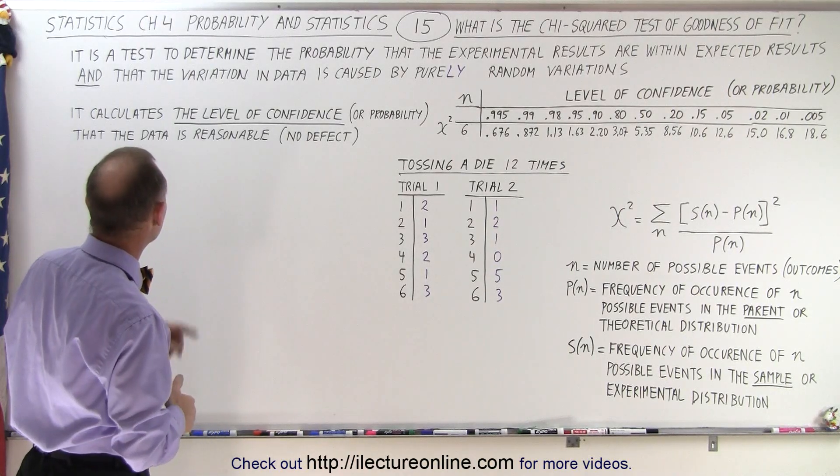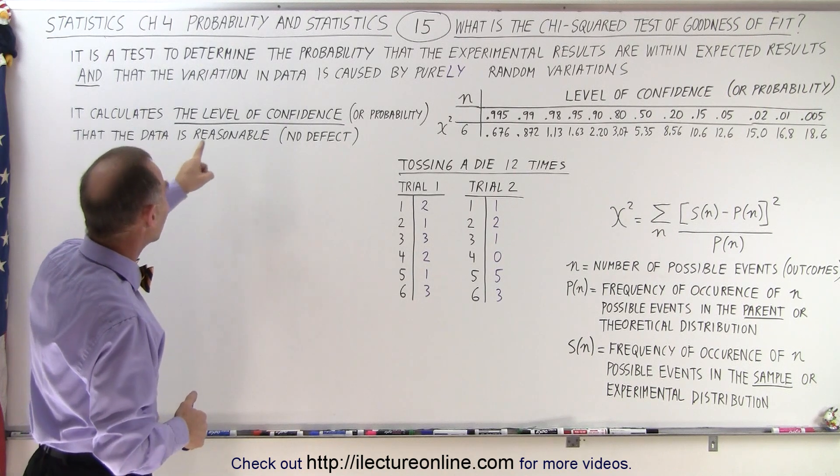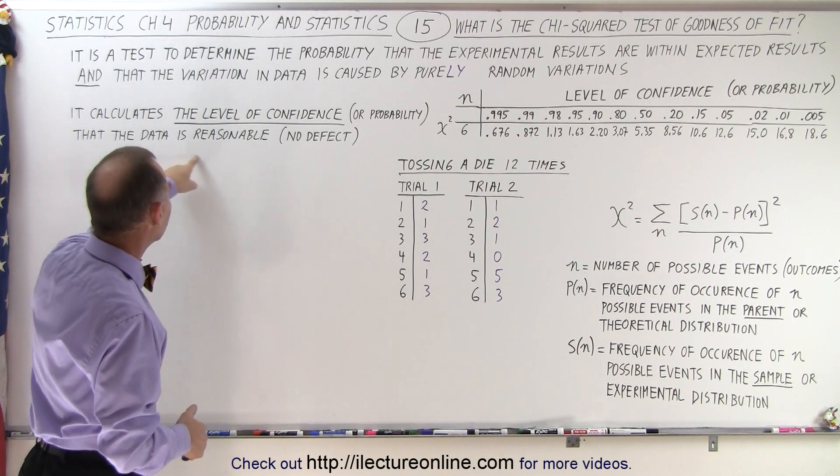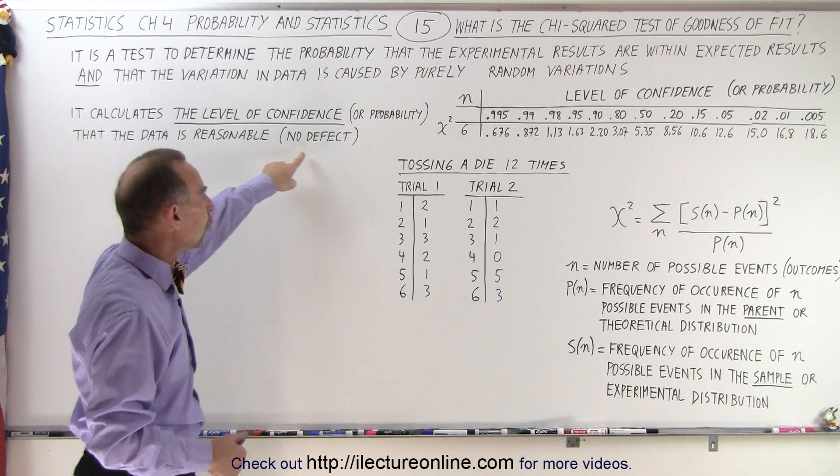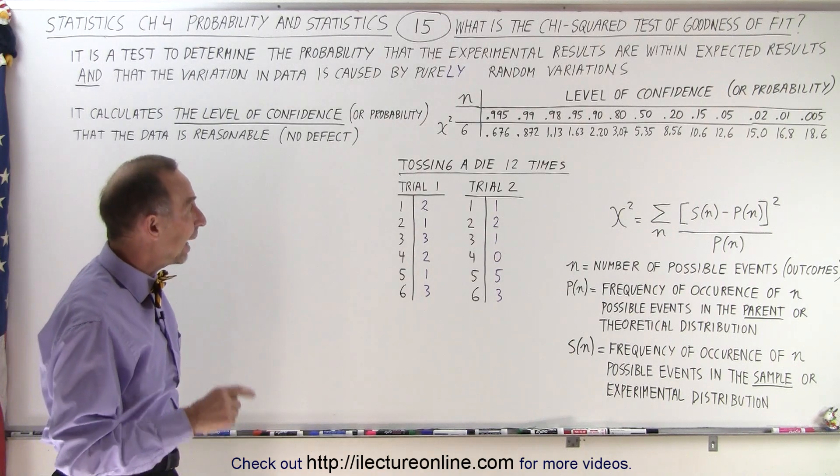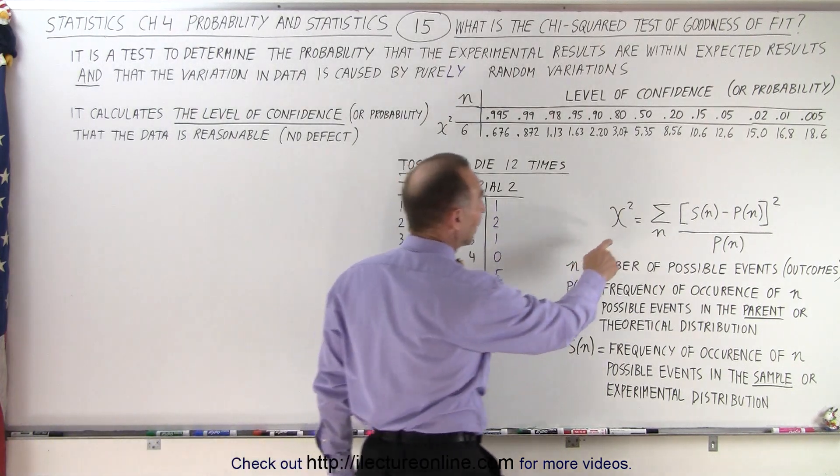So how does that work? Well, it calculates the level of confidence or probability that the data is reasonable, that there's no defect, or that there's nothing wrong with the data. And the equation looks like this.